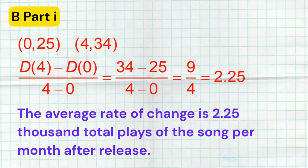So here's my work. It's really straightforward. I got two points, (0,25) and the second point is (4,34). We know that it's the outputs divided by the inputs. That's how you find average rate of change. So that's 34 minus 25 is 9. In the denominator, we have the inputs, 4 minus 0, and we get 4. 9 divided by 4 is 2.25. It did want us to express that as a decimal, so definitely want that 2.25 there. And then I wrote that the average rate of change is 2.25 thousand total plays of the song per month after release. Not too bad there at all.